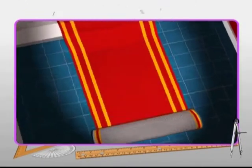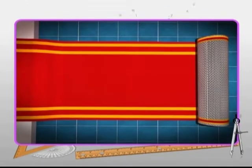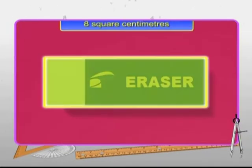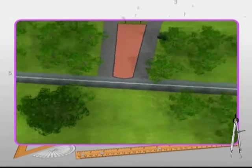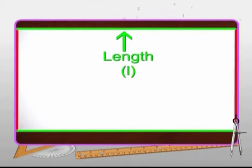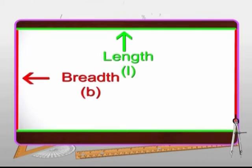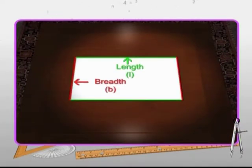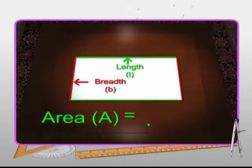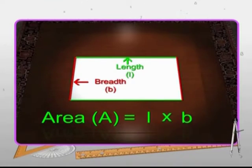A few examples of the units used are square meters, square centimeters and square kilometers. The area of a rectangle can be calculated by multiplying its length and breadth as its opposite sides are equal. The formula to find out the area of a rectangle is A equals L multiplied by B, where A stands for area, L stands for length and B stands for breadth.